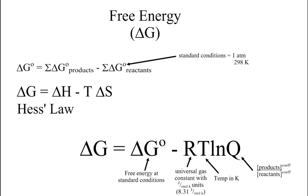And Q is the reaction quotient — remember, as we move toward equilibrium, the equilibrium is going to shift. Q is the products raised to their coefficients divided by the reactants raised to their coefficients. At equilibrium, Q equals K, and that will rearrange this formula for us. For right now, this is the formula we use when we're not at standard conditions.